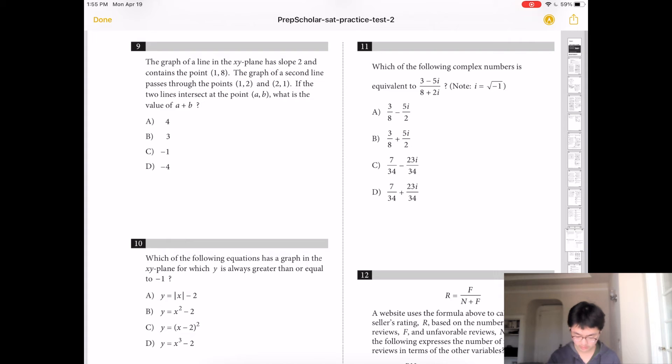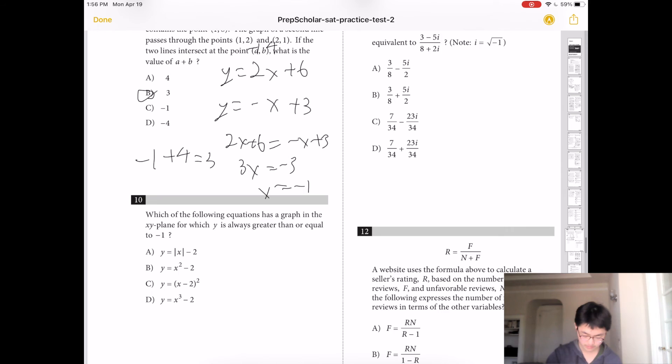Number 9, if the two lines intersect at this point, what is the value of a plus b? So the first line is y equals 2x plus 6. And the second line is y equals negative x plus 3. And this intersects at 2x plus 6 equals negative x plus 3. 3x equals negative 3. x equals negative 1. So a would be negative 1. And b would be 4. And negative 1 plus 4 equals 3. Answer is B.